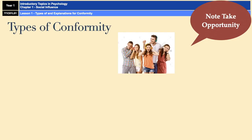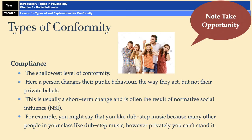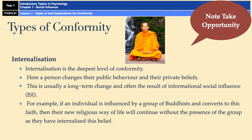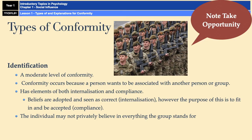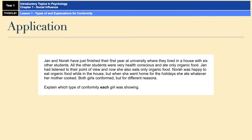There are three note-taking slides here, so feel free to pause on any of those. There's compliance, internalisation, and identification. It might also be useful to see how this could come up in an exam — you could get short answer questions like 'outline what is meant by compliance', or application questions where you get a story and explain what type of conformity each person was showing. For example, Jan was displaying internalisation because she accepted the views as correct, whereas Nora was more along the compliance route.